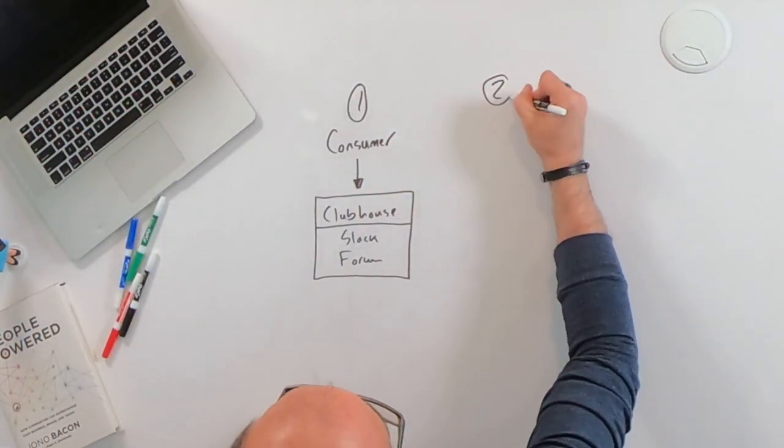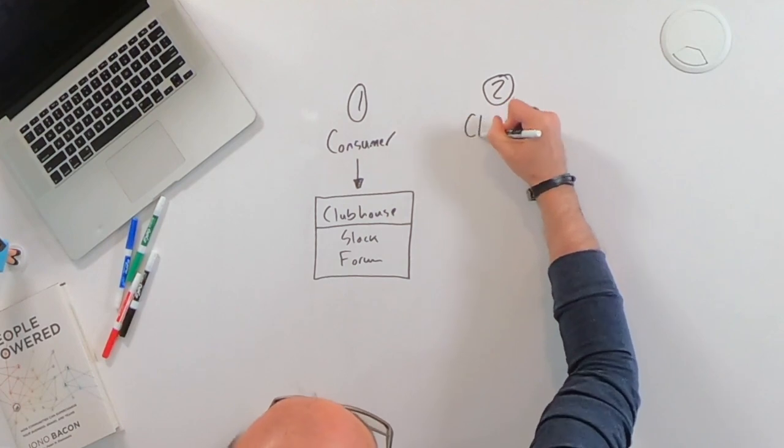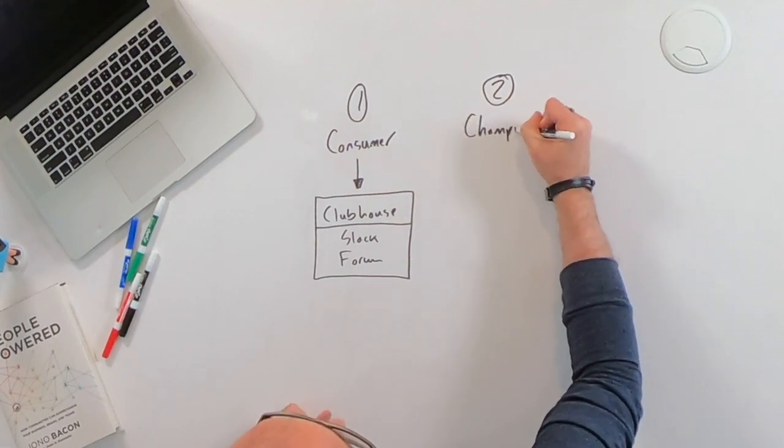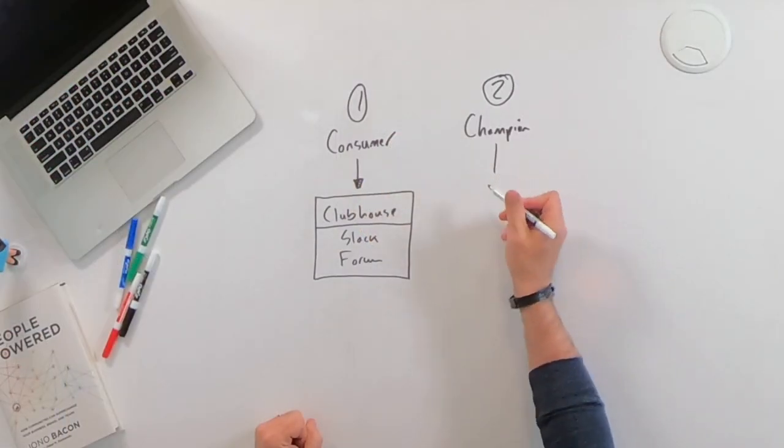Now, the second model is called a champion model. And what we do here is we take this consumer model and we strap a jet pack to it. So what we do is we essentially say, okay, we've got people in our shared clubhouse area, forum or Slack channel, something along those lines. But now we want them to go the extra mile. We want them to create content, solve problems, run events and things like that. So what do people typically do inside of a champion community?